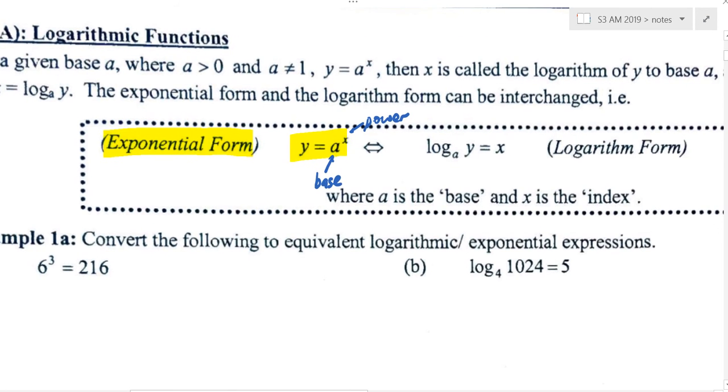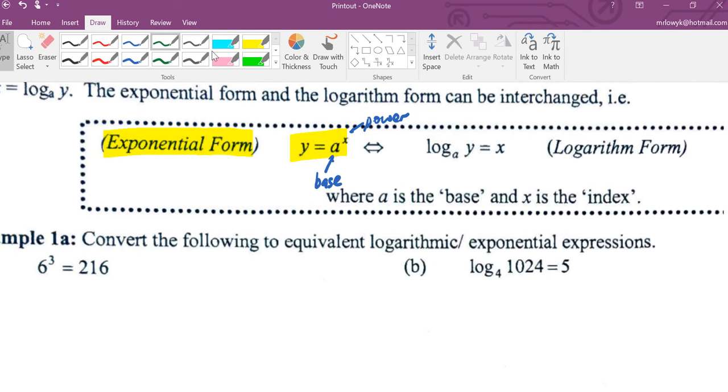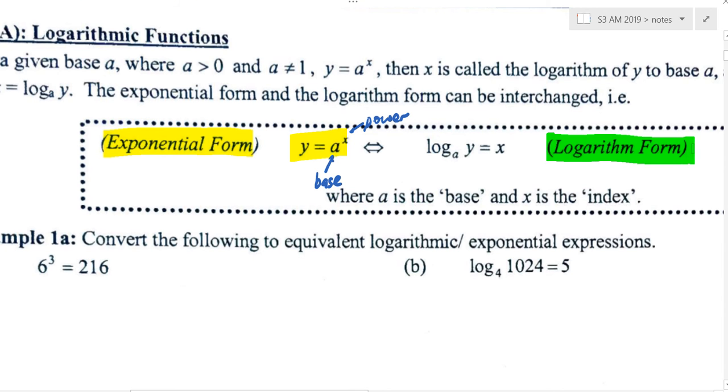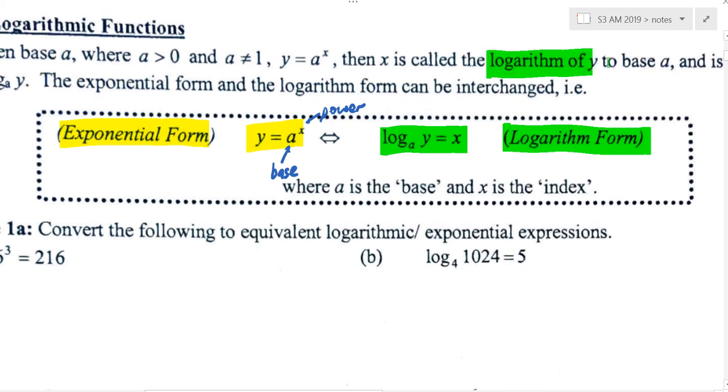So nothing new about the yellow thing. Today, we are going to learn about the green thing. So green thing means log, then there's a small number A, then there's a big number, then there's X. So how do I read this? I will read this as log base A. Can you highlight log base A? Then of Y. So the base here is the small number at the bottom, like base, like bottom. Let's see how do I place everything in the picture.